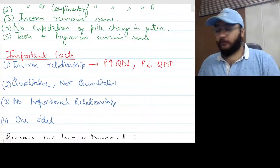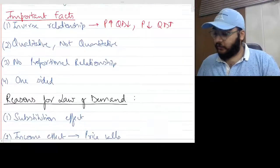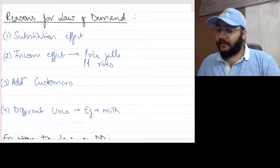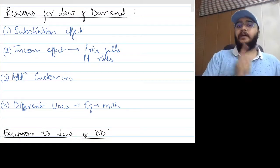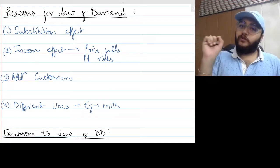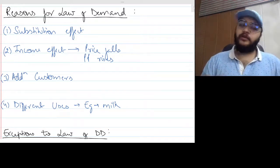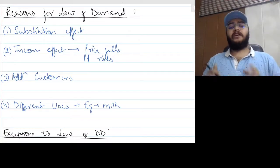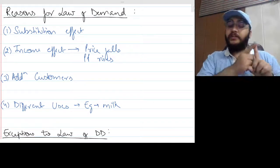Now we are on this very important topic: reasons for the law of demand. The first reason is the substitution effect. If you look at the first reason for law of demand, you can see the substitution effect. We also have the income effect, additional customers, and different uses. When studying the law of demand, you need to study all these effects.